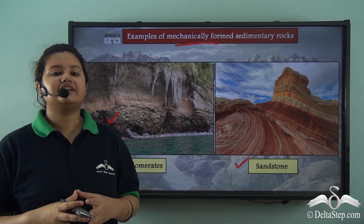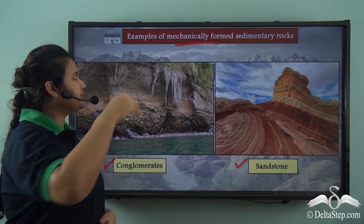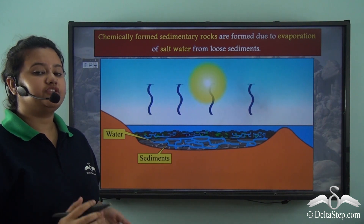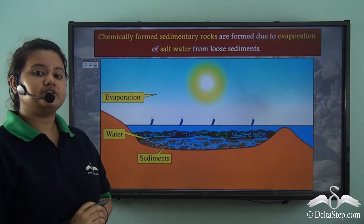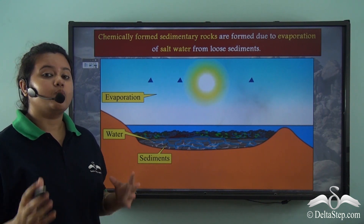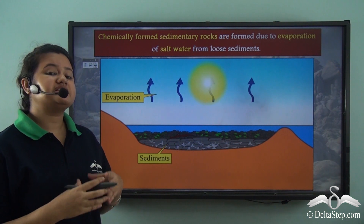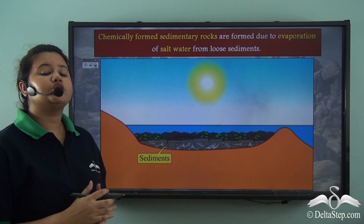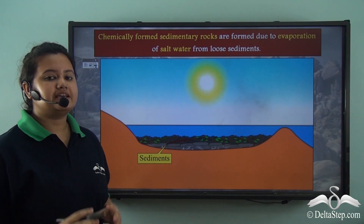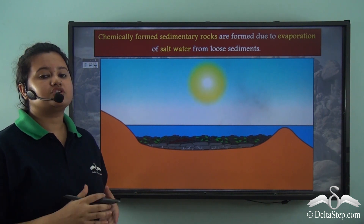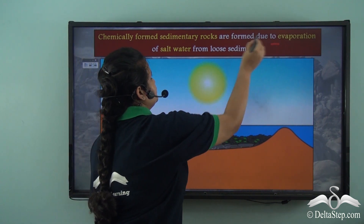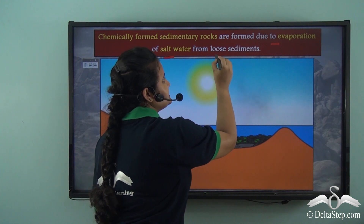Let's learn about another type of sedimentary rock. Sedimentary rocks can also form chemically and therefore they are known as chemically formed sedimentary rocks. Sometimes in lagoons or any other shallow water bodies, water from loose sediments evaporates. So the intermolecular spaces between the sediments reduce and they become more compact to form sedimentary rocks.